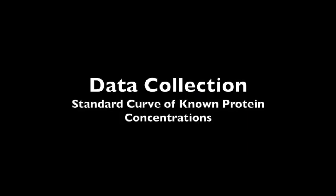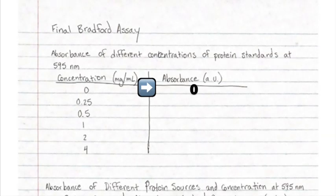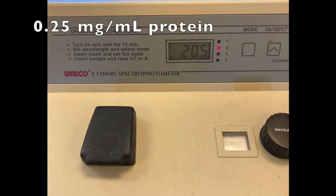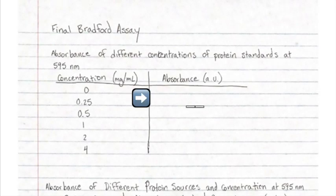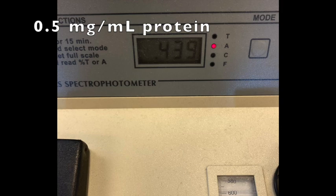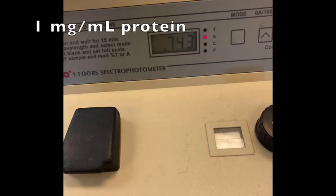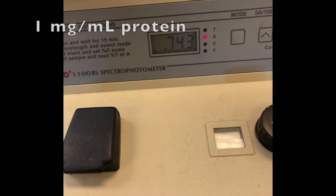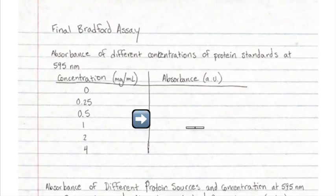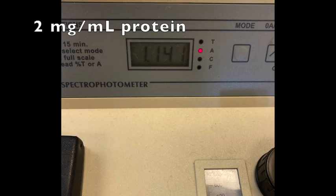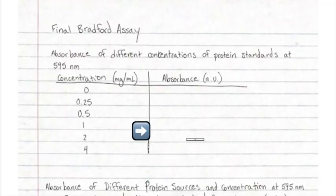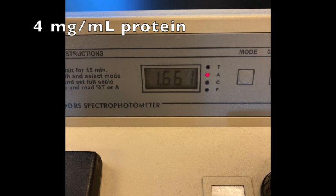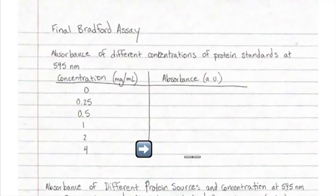You will now see data for the different standard concentrations of protein that you should fill into the notebook data table. First, fill in the blank: zero concentration and zero absorbance. Next, an absorbance of 0.205 for the 0.25 mg/mL. Then an absorbance of 0.439 for the 0.5 mg/mL. Next, 0.743 for the 1 mg/mL. Then 1.141 for the 2 mg/mL sample. And lastly, 1.661 for the 4 mg/mL sample — fill that into the final line of this first table.